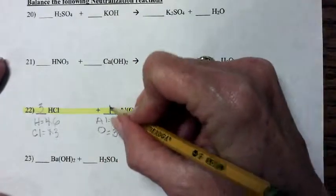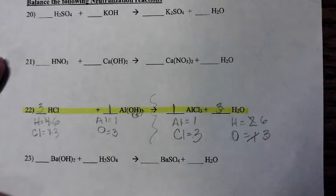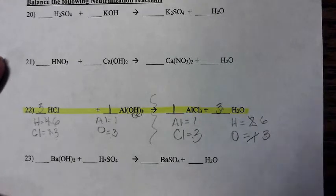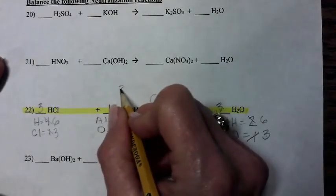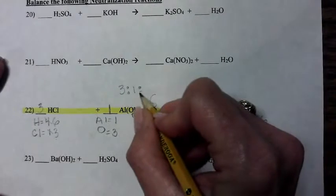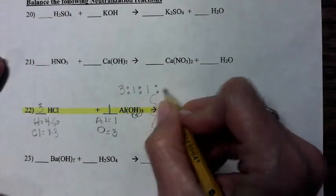Now you can put ones in the blanks where there's nothing because if there's no number there, it's assumed that it's a one. But you don't have to. That's completely your call. So the balanced equation would have a ratio of coefficients of three, one, one, three.